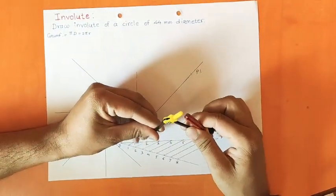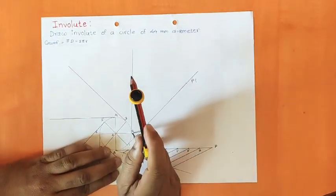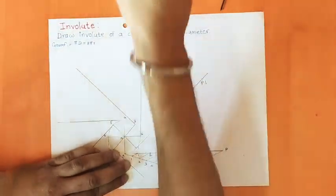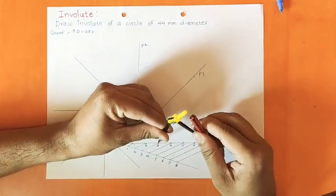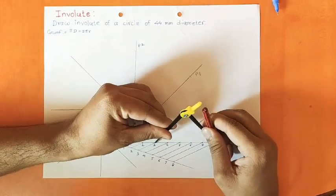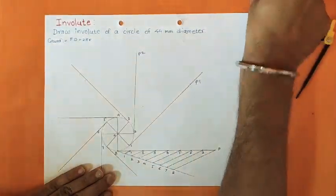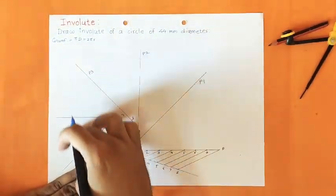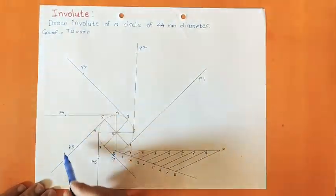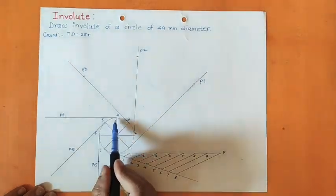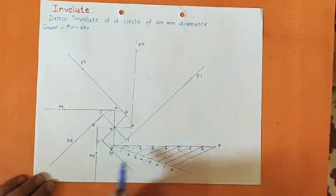Similarly, take in the compass distance equal to 2P, come to the tangent at point number 2, and you will get point P2. Take compass distance equal to 3P and get point P3 on the tangent at point 3. Continue getting all points up to P7. As you can see, I have transferred distances 4P, 5P, 6P, and 7P to get points P4, P5, P6, and P7.